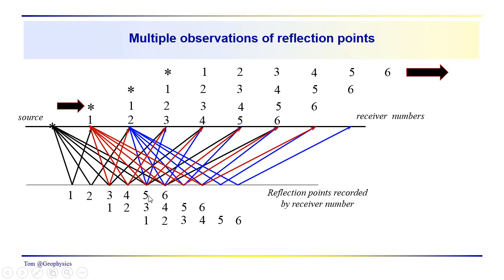So we get a multiplicity of observations for individual reflection points. You can see where we've got five, three, one, six, four, two. Do it again. Five, three, one, six, four, two.